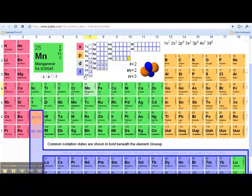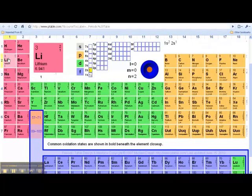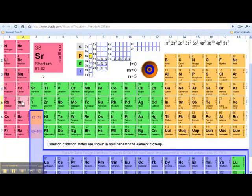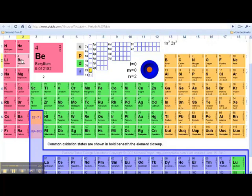Now, the neat thing is the main group metals down here, the alkali metals and the alkali earth metals, are always going to be either positive 1. For example, group 1 alkali metals are always going to be positive 1. And the group 2 alkali earth metals are always going to be positive 2. That's a guarantee.